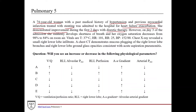However, on day three of the admission, she suddenly develops shortness of breath and her oxygen saturation decreases from 98% to 84% on room air. Patients in the hospital can become at risk for certain things. For example, pulmonary embolism — especially elderly patients who aren't moving around much are at risk for developing DVTs in the legs, which can then embolize.